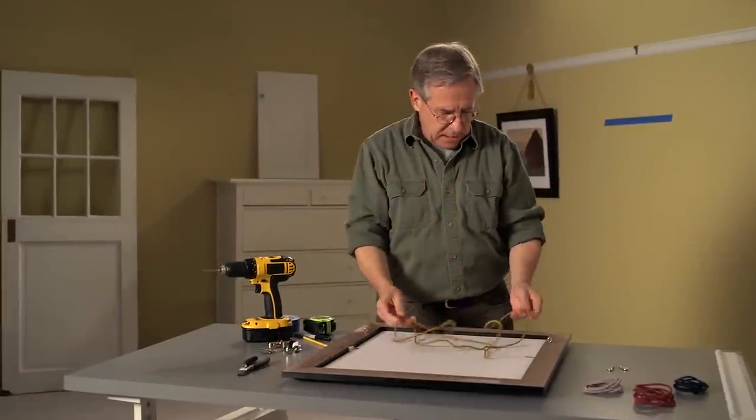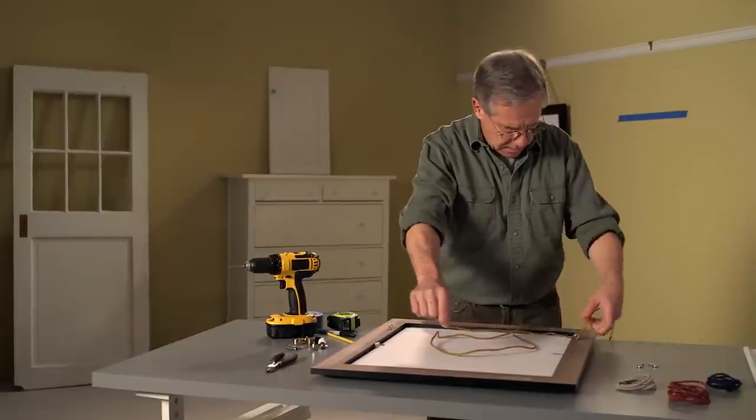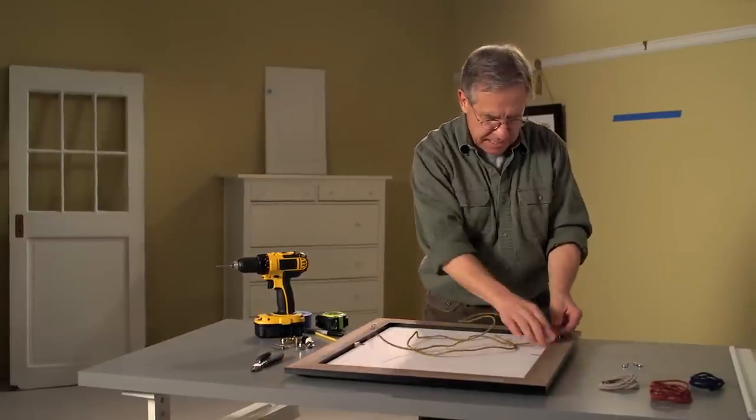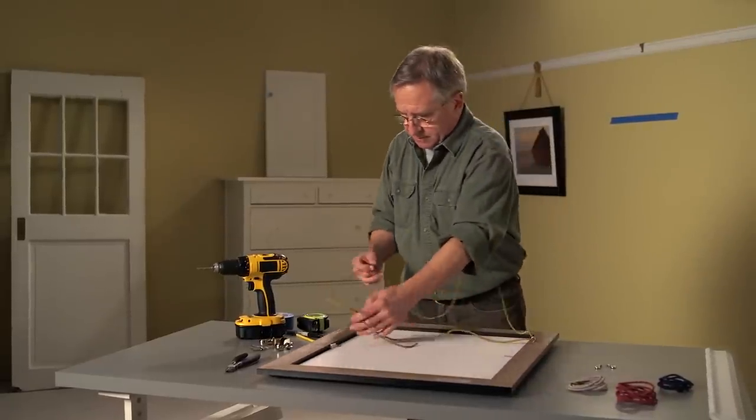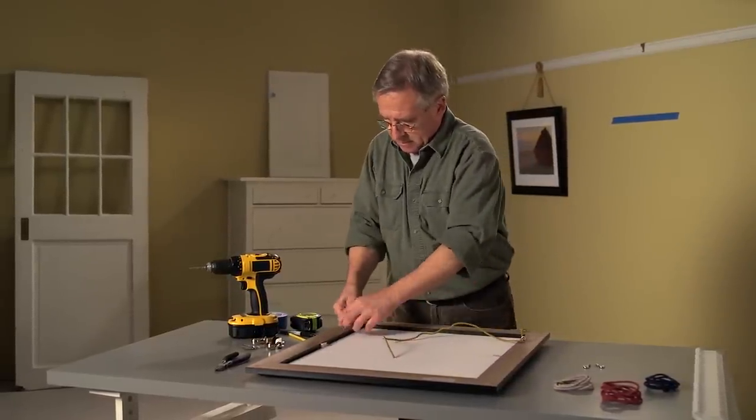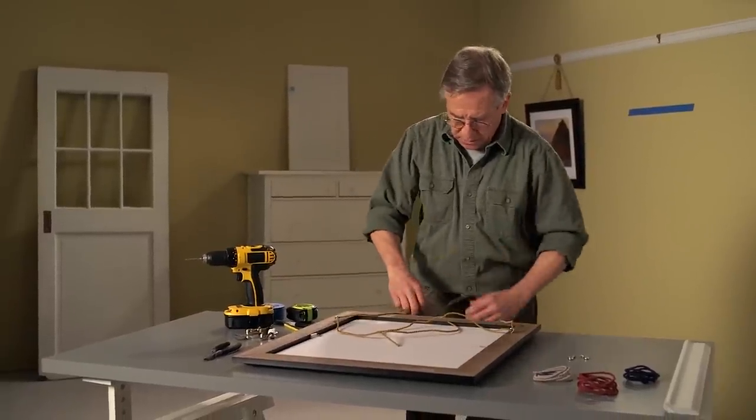Next, we'll thread the cord through the eyelets. And we'll stop at that crimp that you made in each section of the cord. Remember, that's the point that we measured so we know what our height is going to be.